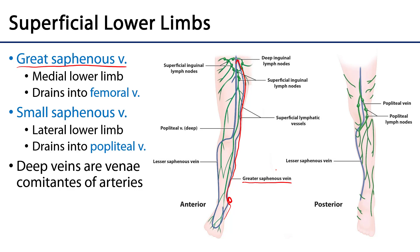The small saphenous vein — also sometimes referred to as the lesser saphenous vein — drains the lateral lower limb and foot, traveling up the lateral aspect of the leg. It then turns medial and dives into the popliteal fossa, where it joins with deep venae comitantes to become the popliteal vein, which is an accompanying vein of the popliteal artery.